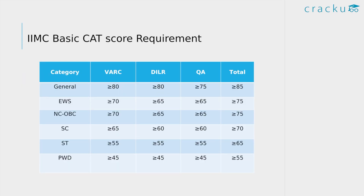Firstly, candidates are shortlisted based on their CAT scores. These are the minimum required CAT cutoffs for the various categories. For the general category, the CAT cutoffs are 80 percentile in VARC and DILR sections and 75 for the Quant section and 85 percentile overall. For the EWS and OBC categories, it's 70 percentile in VARC and 65 each in DILR and Quant, and 75 percentile overall. Similarly, these are the cutoffs for the SC, ST and PWD categories. Please note that these are the minimum required cutoffs — the actual cutoffs of candidates who were shortlisted for the interviews were higher.